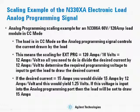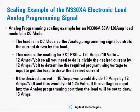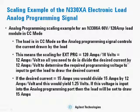For the analog programming scaling, here's an example for the N3306A 60 volt, 120 amp load module in CC mode. Since the load is in CC mode, the analog programming signal controls the current drawn by the load. The scaling for the external programming port is 120 amps per 10 volts, equal to 12 amps per volt. Divide the desired current by 12 amps per volt to determine the required programming voltage to input to the external programming port.